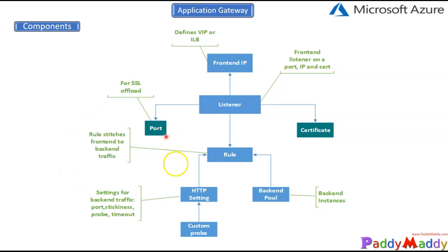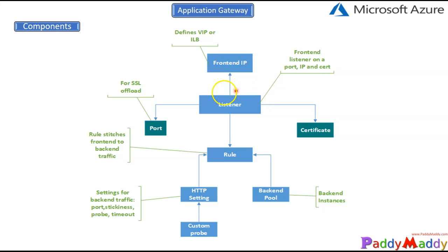Now let's look at the internal components required when configuring Application Gateway. The first is the front-end IP — the virtual IP or VIP for your Application Gateway. Listeners work based on ports, similar to the traditional load balancer. The listener listens for client requests and you can configure ports ranging from 1 to 65502 for v1, or up to 65199 for v2.